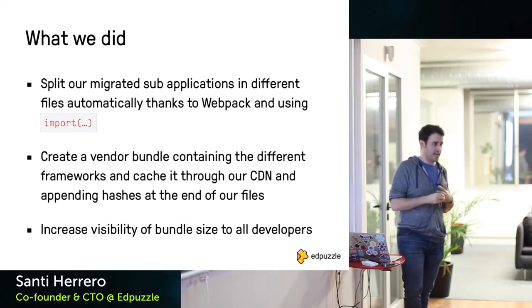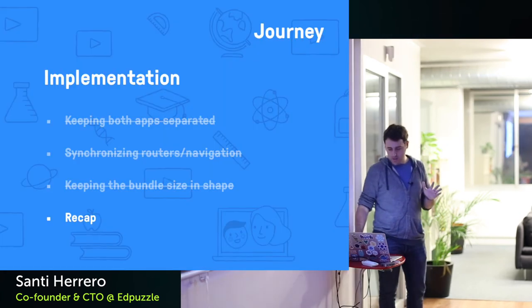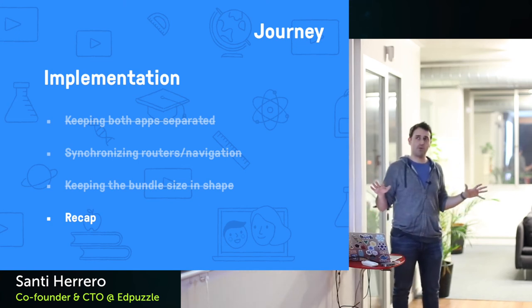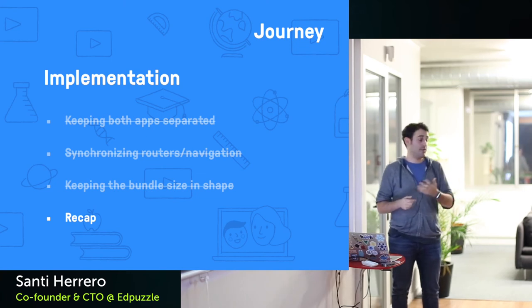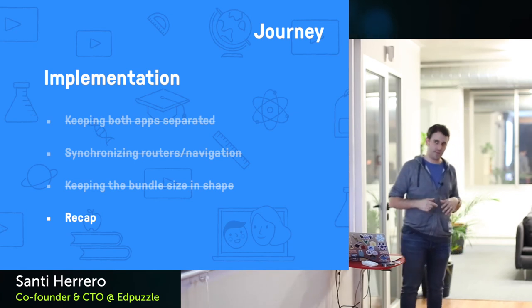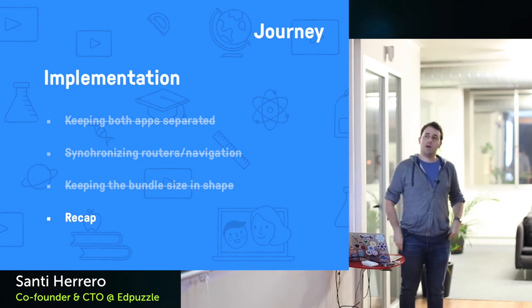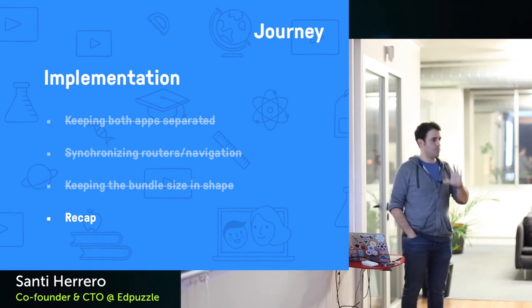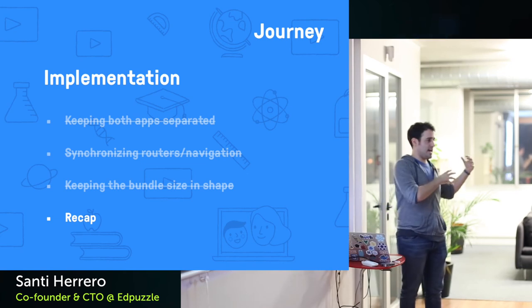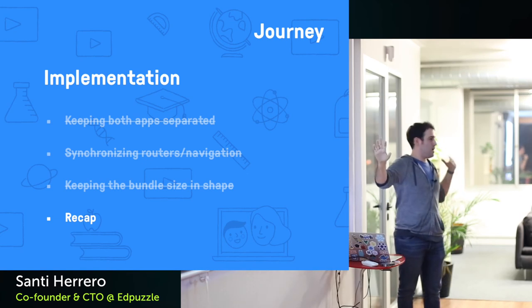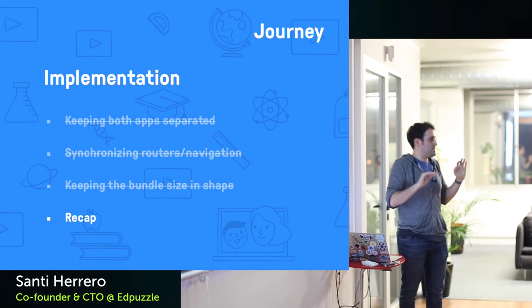I'd recommend increasing visibility of bundle size to all developers, not just the one who knows webpack. If they see a problem, they'll learn webpack because they want to solve it, rather than having it assigned as a learning task. So to recap: we can now write React code that is completely unaware of Backbone — with the caveat that we use `BackboneLink` and `BackboneRedirect`, though you could name them `Link` and `Redirect` with no caveat. Backbone code can still call NavigationHelpers just as before.